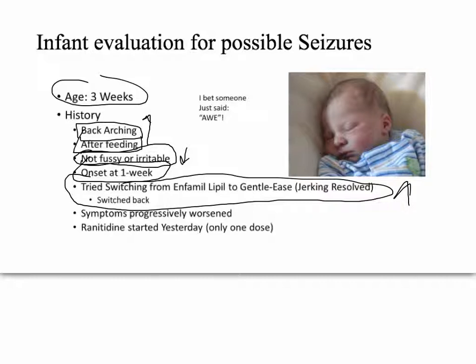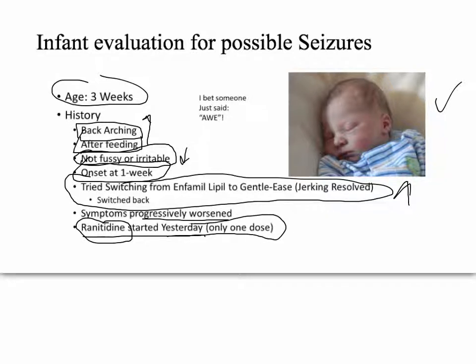Symptoms got progressively worse and she was started on ranitidine by her pediatrician, took one dose yesterday. Today she had a really bad spasm that lasted a lot longer than normal. I don't think the medicine caused that, but I think if it was what the pediatrician thought it was, the medicine would have counteracted it.